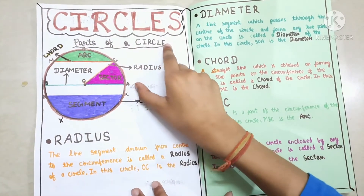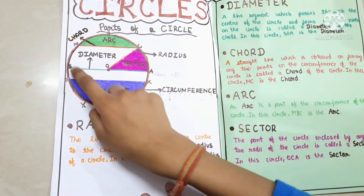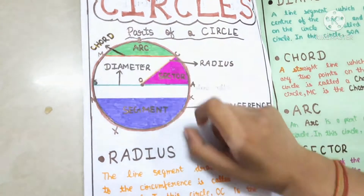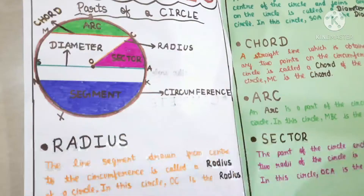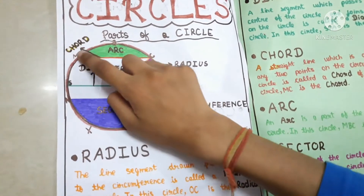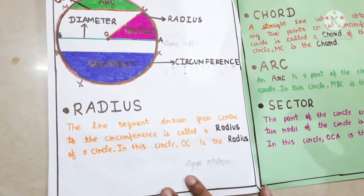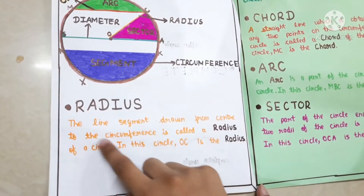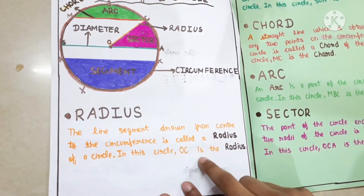Now, circles — parts of a circle. This is radius, this is diameter, this is chord, this is sector, this is segment. The line segment drawn from the center to the circumference is called a radius of a circle. This is arc.